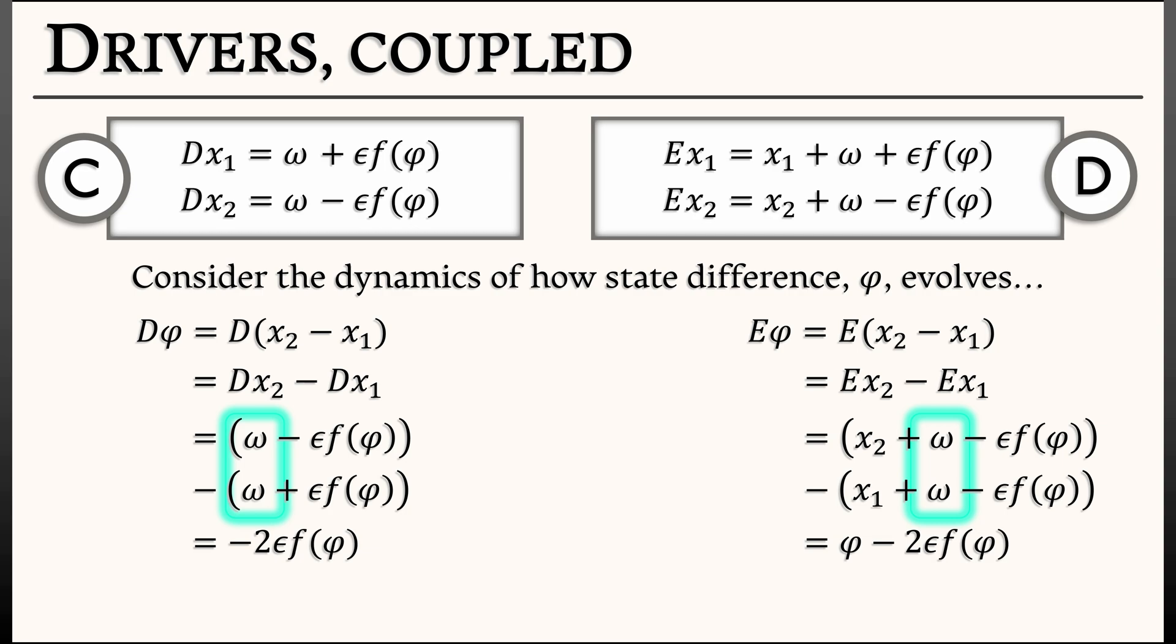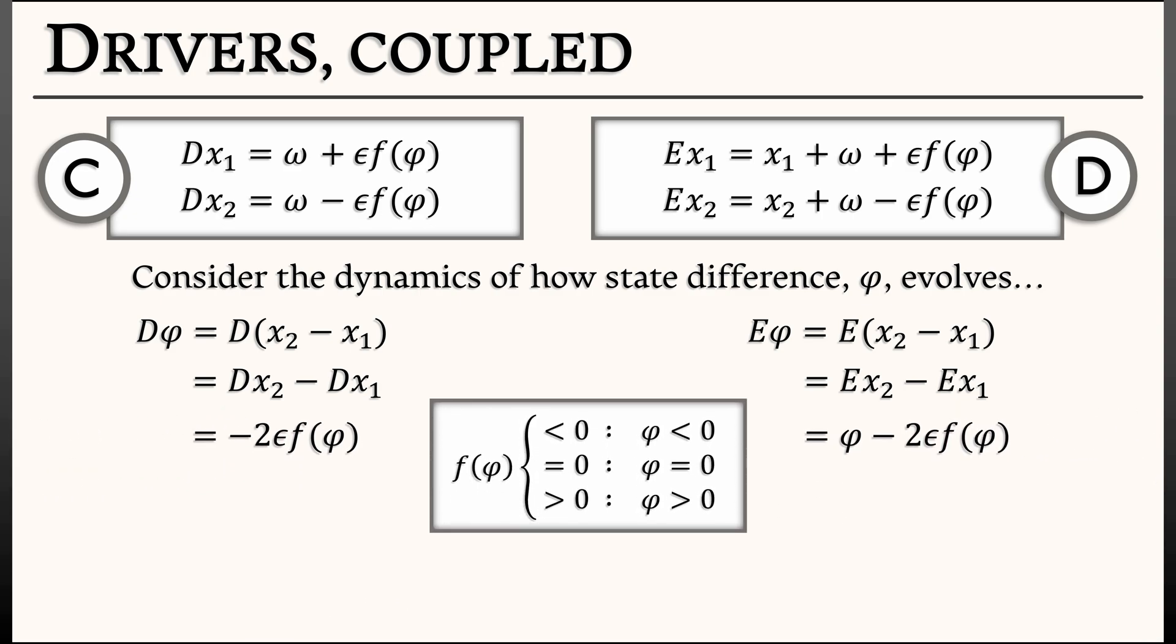Now, with these one-dimensional systems, we can do what we know how to do. Let's look for an equilibrium. And guess what? There's an equilibrium at phi equals 0. Why? Because if we remember about our coupling function f, then one of the things that we programmed into it was that f of 0 is 0. So that means that we have an equilibrium where the state difference vanishes. Furthermore,